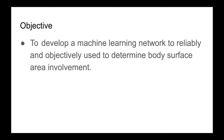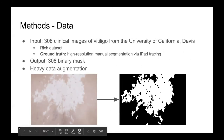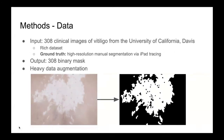Given the inherently subjective context of the previous assessment tools, our project objective is to develop a machine learning network that can be used to reliably and objectively determine body surface area involvement of vitiligo. For our dataset, we have 308 clinical images of vitiligo from the University of California Davis. The data collection was supervised by Dr. Huang, and the manual high-resolution segmentations were performed by Jeslyn. The dataset is very diverse, with a wide range of skin tones and lesion complexity, but it is also very small.